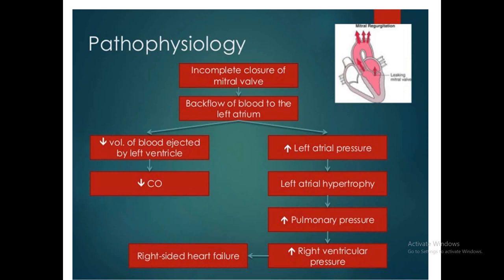The incomplete closure of the mitral valve causes back flow of blood to the left atrium and reduced blood ejected by the left ventricle, so stroke volume and cardiac output are reduced. Left atrial pressure increases and left atrial hypertrophy occurs, causing atrial fibrillation. Pulmonary pressure increases, secondary pulmonary hypertension occurs, right ventricular pressure rises, and there will be tricuspid regurgitation as well.